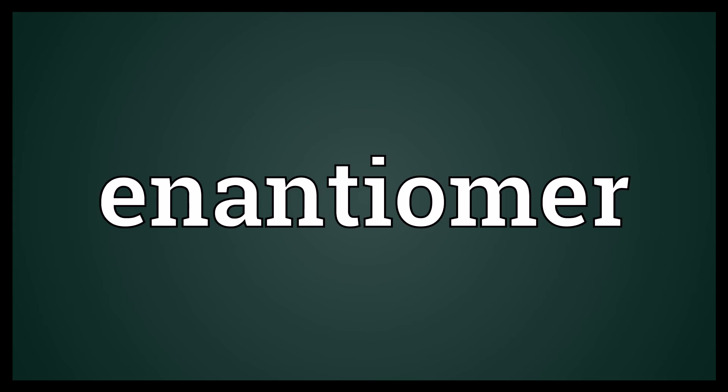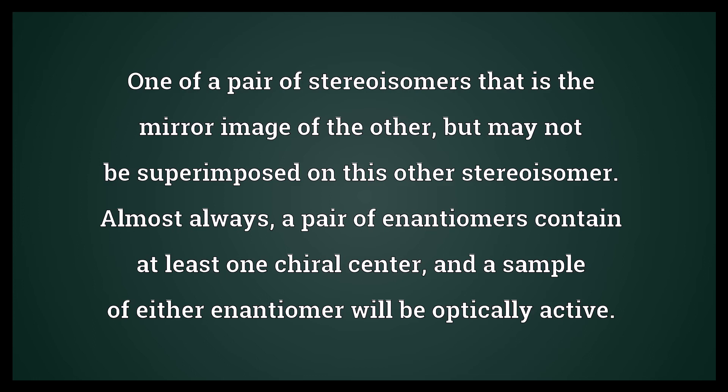Enantiomer: One of a pair of stereoisomers that is the mirror image of the other, but may not be superimposed on this other stereoisomer. Almost always, a pair of enantiomers contain at least one chiral center, and a sample of either enantiomer will be optically active.